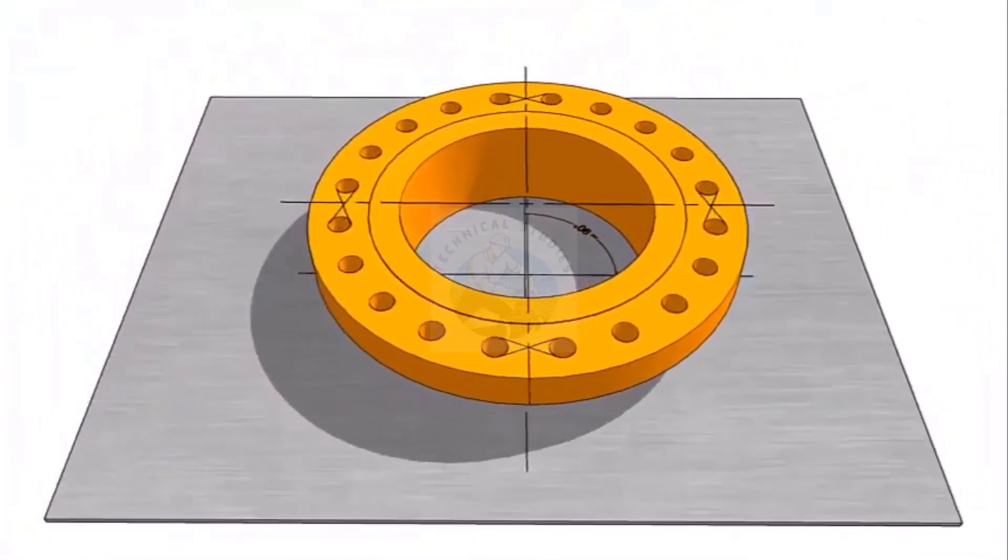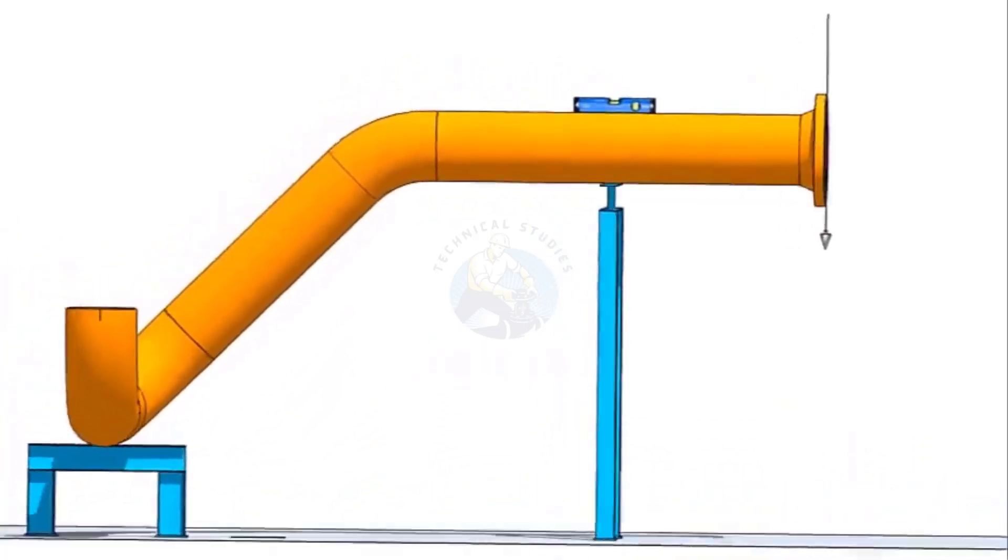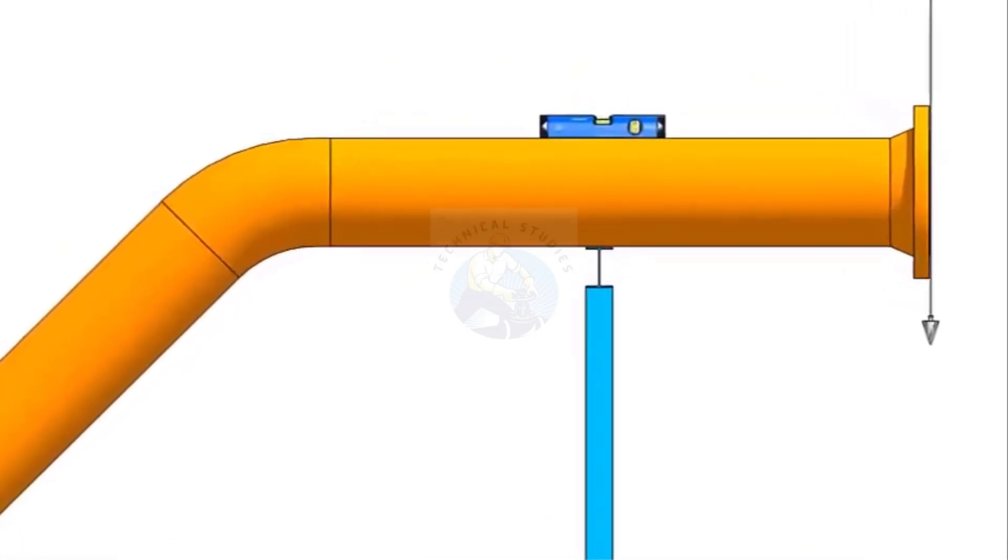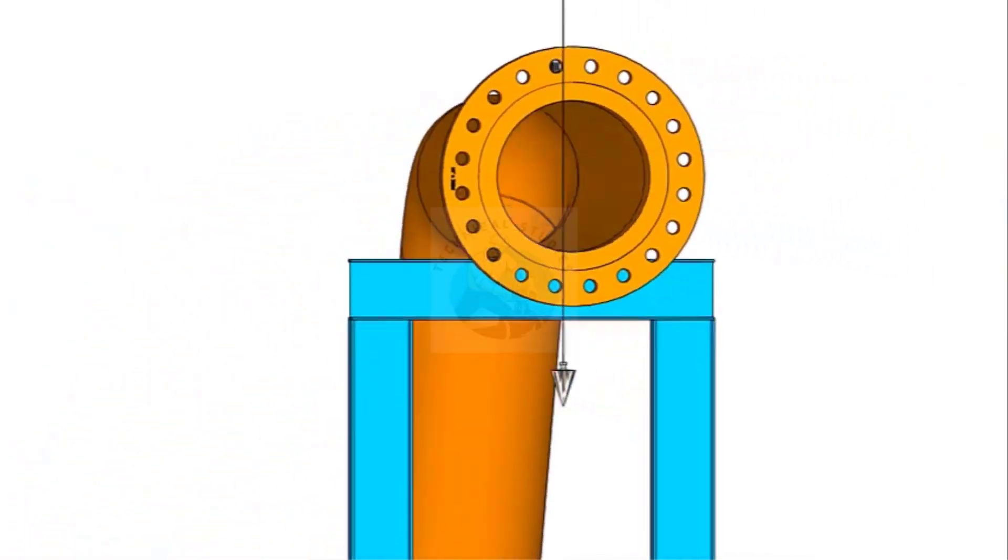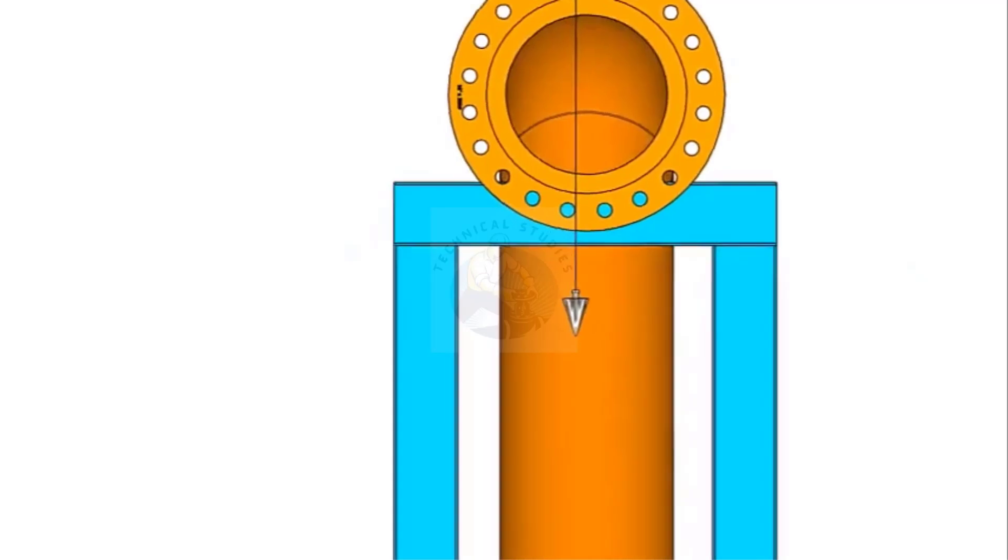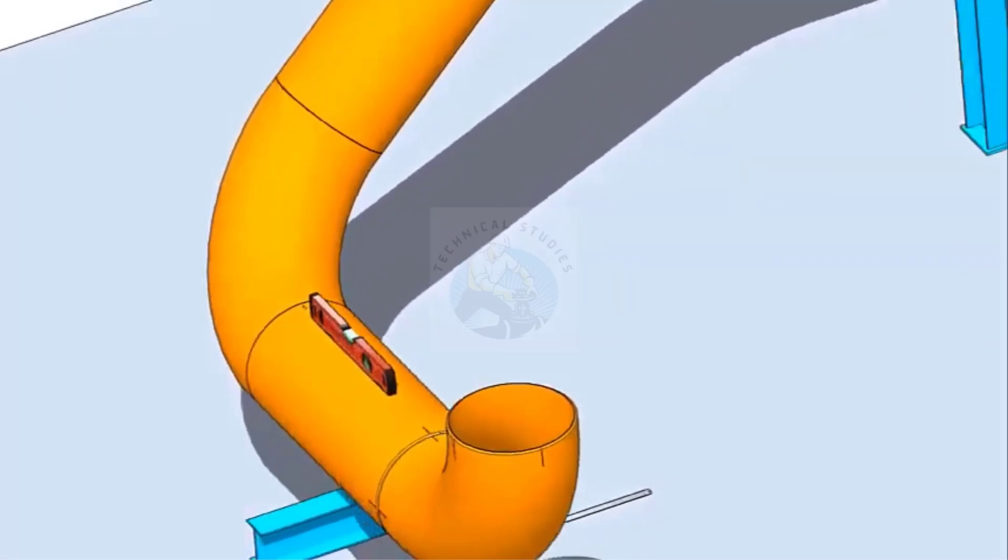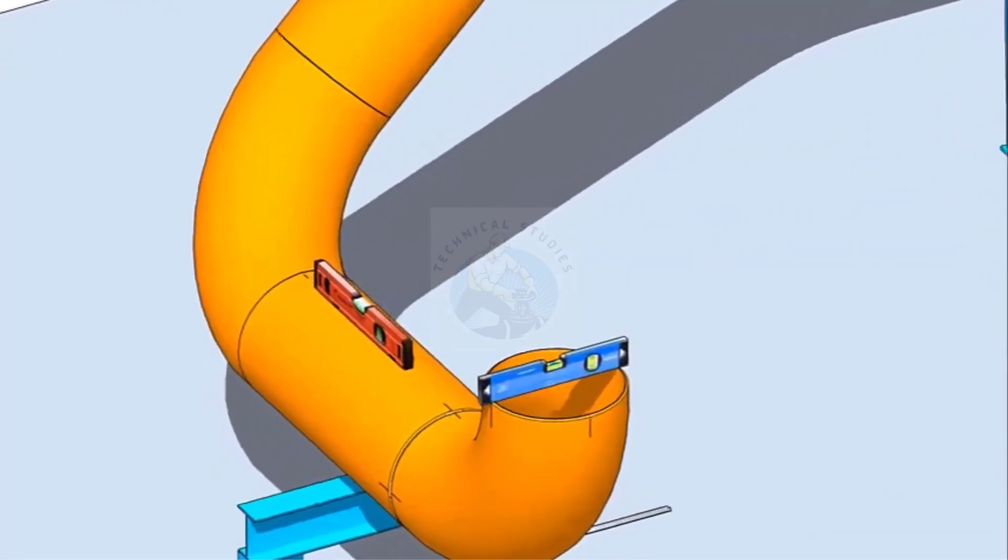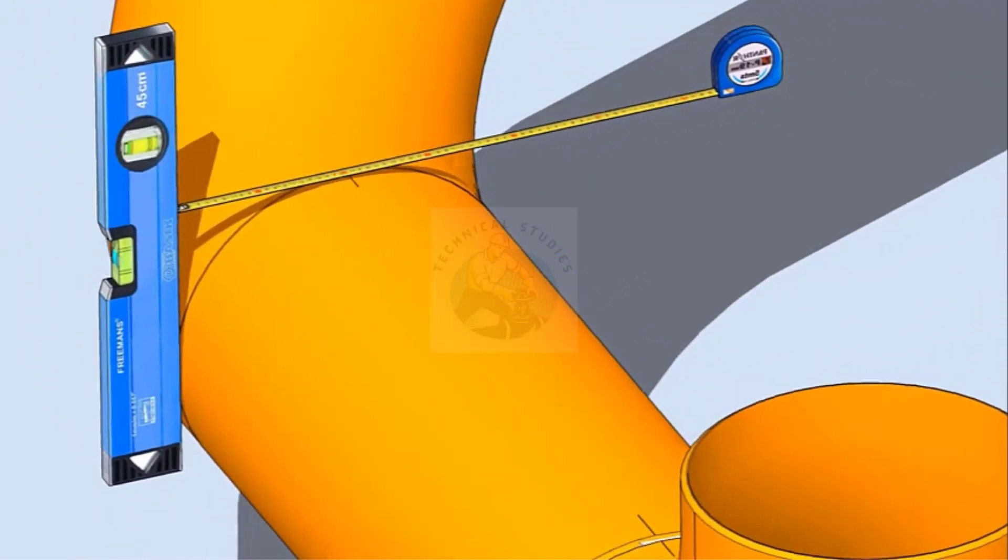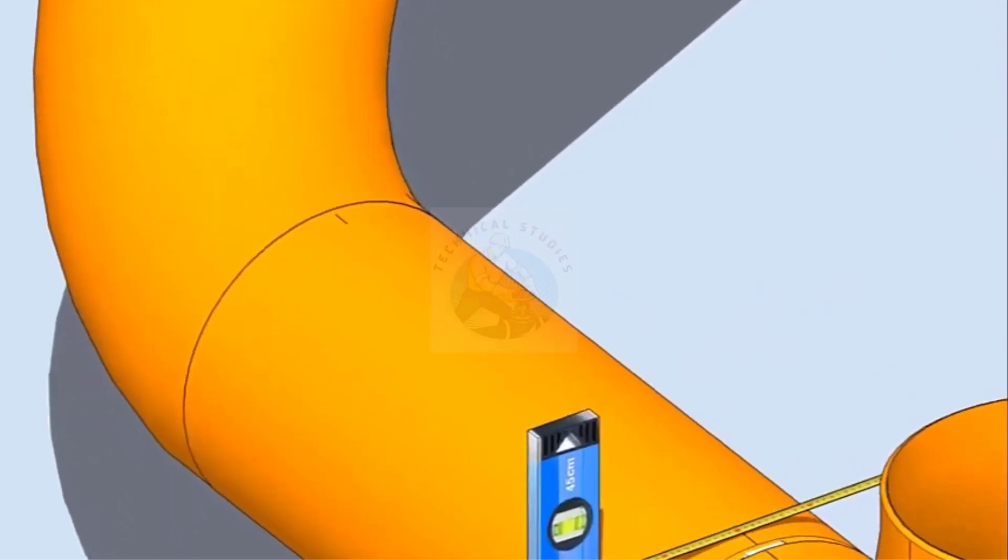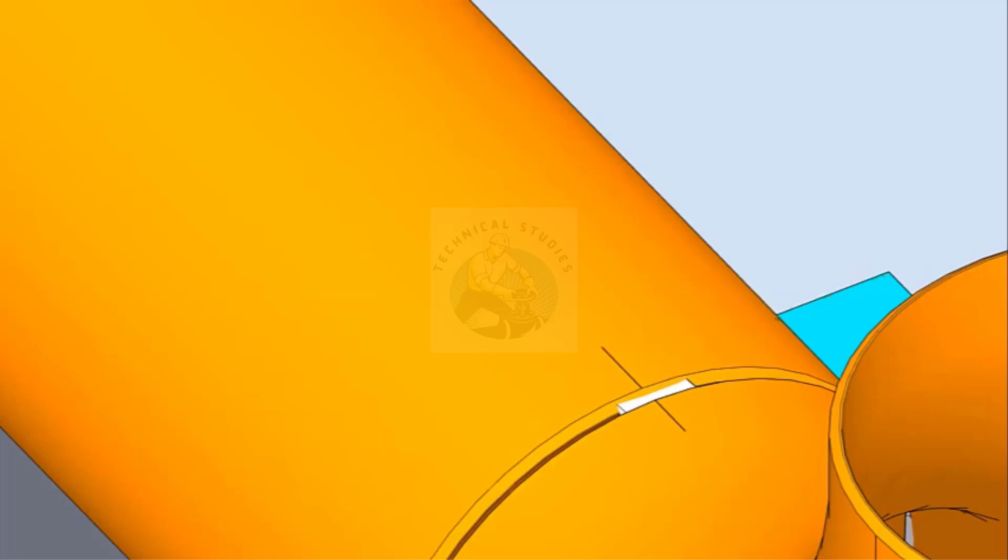Let us check the level of the existing spool. Check the level vertically touching the side of the pipe and mark half OD on the top of the pipe. Cross check this mark from the opposite side also following the same method. Draw a thin line connecting these two marks.